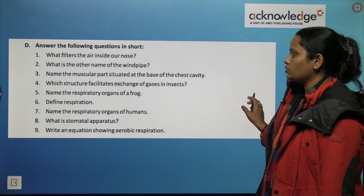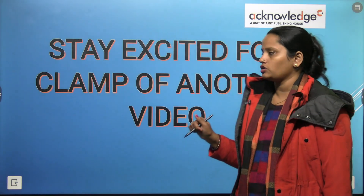Now let's quickly answer some questions: What filters the air inside our nose? The hairs present in our nostrils filter and protect the air, and mucus helps in trapping dust particles. What is the other name of the windpipe? Find out and write it. Name the muscular part at the base of the chest cavity — it is the diaphragm. Which structure facilitates gas exchange in insects? Name the respiratory organs of a frog — frogs use a dual respiratory system: skin underwater and lungs on land. Do these questions on your own. I hope you have understood the chapter — read it again, solve the exercises, ask any queries in the comments, and I'll be waiting with a new video.